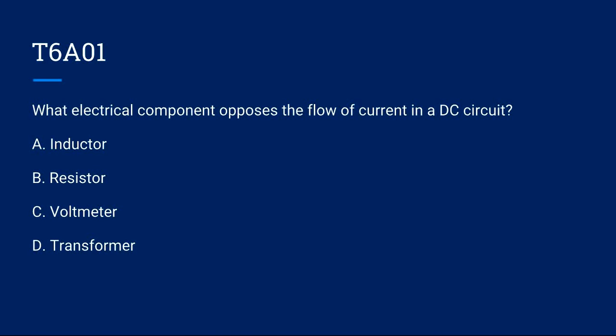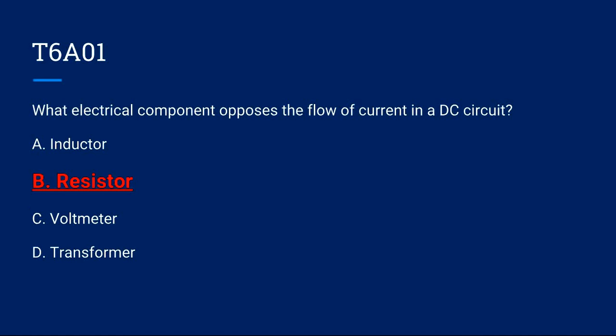Question T6A01: What electrical component opposes the flow of current in a DC circuit? A, inductor. B, resistor. C, voltmeter. Or D, transformer? The correct answer is B, resistor.